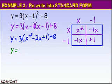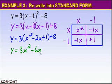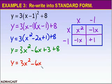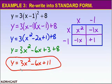So y equals 3 times x squared is 3x squared, 3 times negative 2x is negative 6x, and 3 times 1 is 3. Don't forget to add 8 to that. Now the final thing I need to do is collect like terms. So y equals 3x squared minus 6x, and 3 plus 8 is 11. So to rewrite this example in standard form, we get y equals 3x squared minus 6x plus 11.